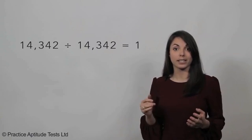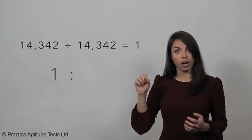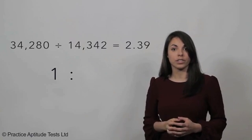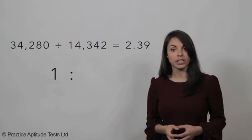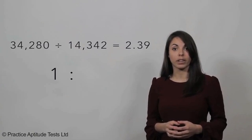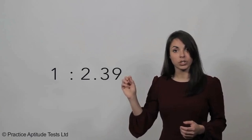So we know that 14,342 divided by itself is 1. So write 1 and colon, then take 34,280 and divide by 14,342, and we get the answer 2.39. So the answer is 1 colon 2.39.